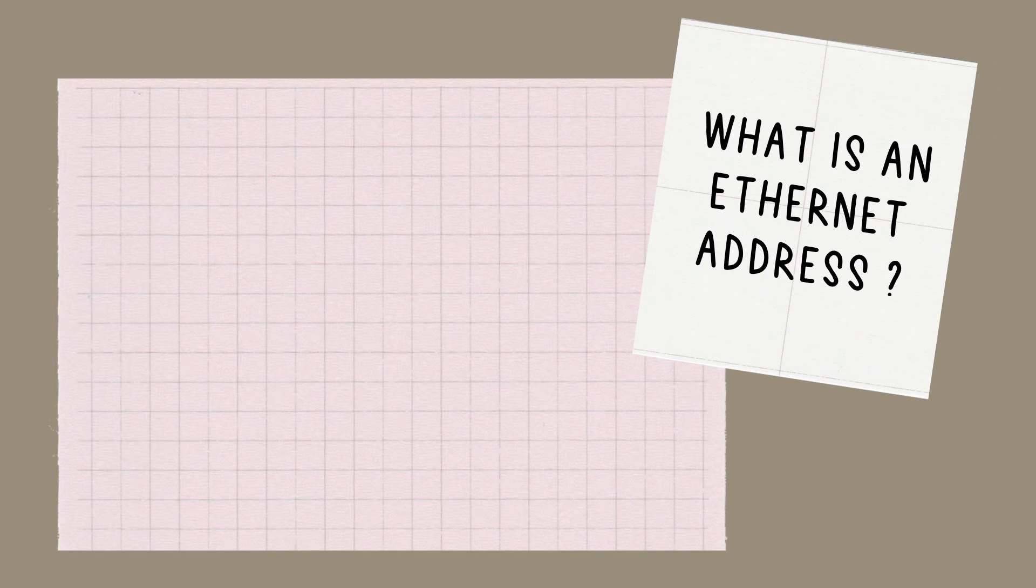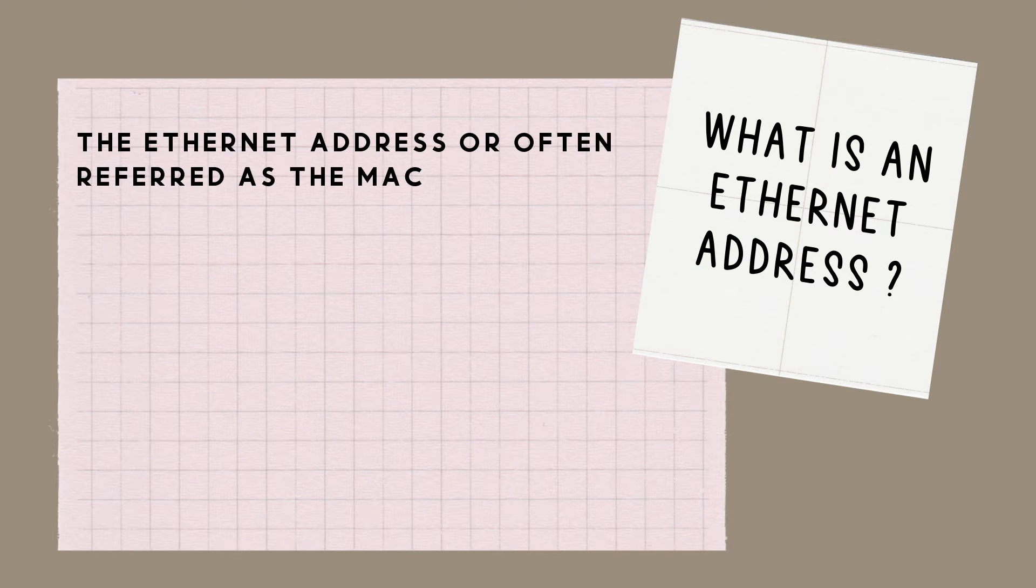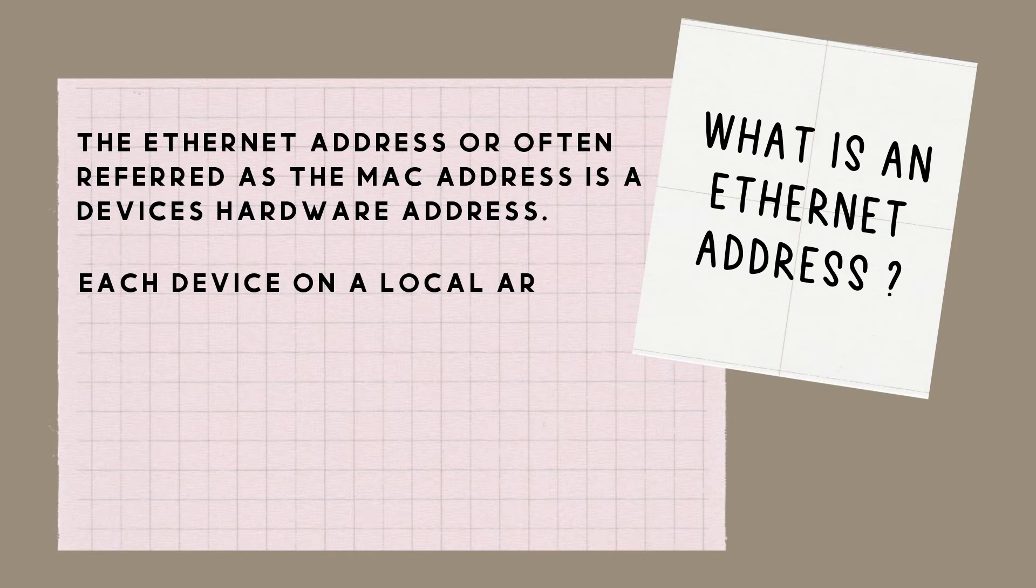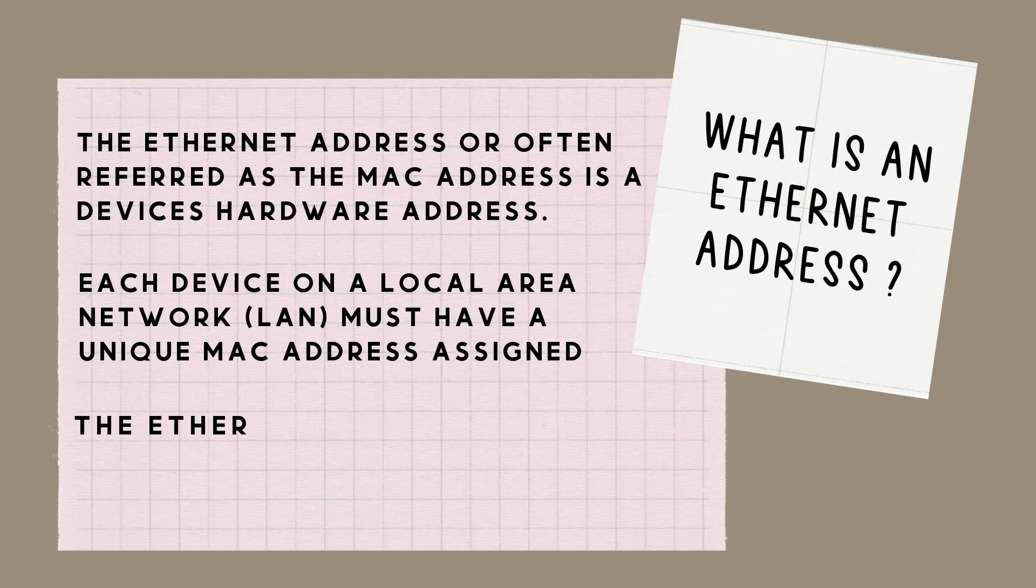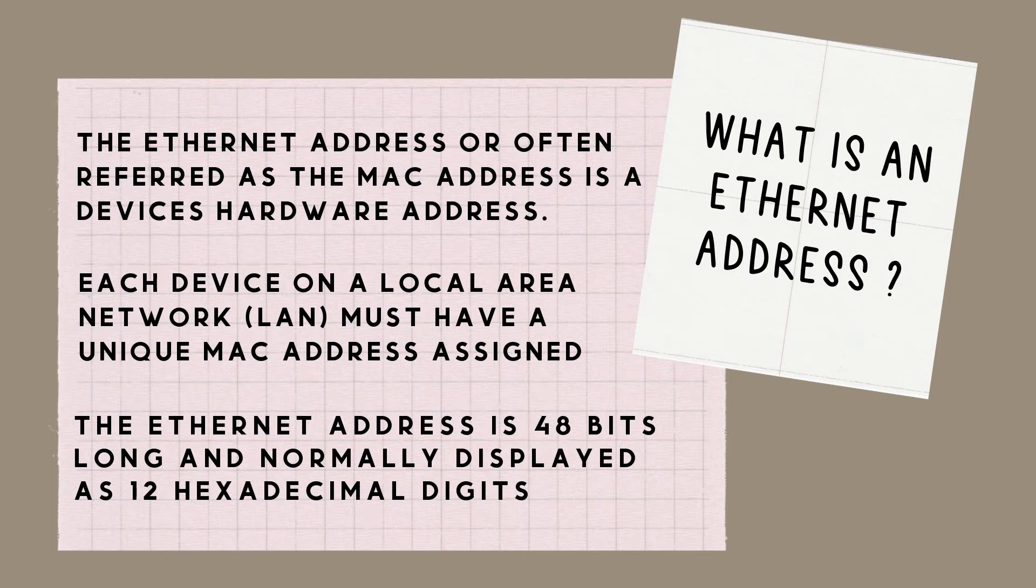What is an Ethernet address? The Ethernet address, or often referred as the MAC address, is a device's hardware address. Each device on a local area network must have a unique MAC address assigned. The Ethernet address is 48 bits long and normally displayed as 12 hexadecimal digits.